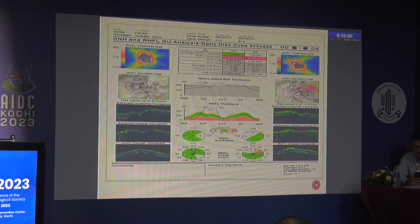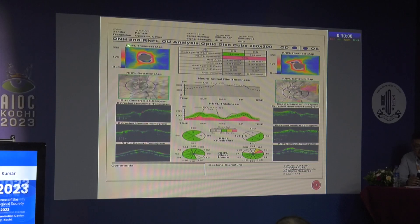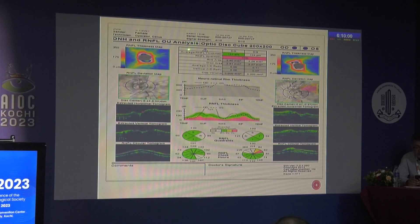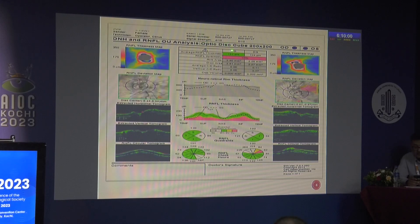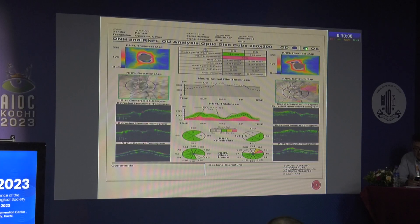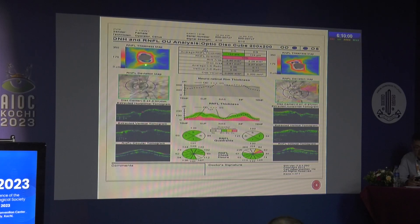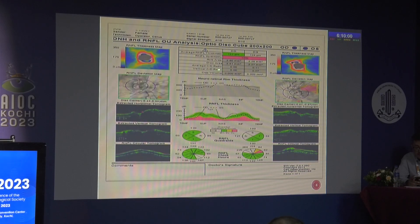A brief review of what the printout looks like: this is the OCT printout where we see the patient details, what has been done for a particular patient — whether we examined the macular area or the optic disc cube — along with pixel strength and laterality of the eye. This section shows the RNFL thickness maps and the various parameters we assess while doing OCT RNFL.